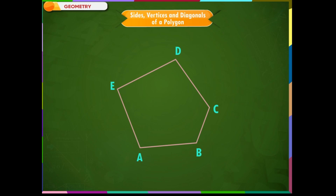Any two sides with a common end point are called the adjacent sides of the polygon. The pairs of adjacent sides are AB and BC, CD, CD and DE, DE and EA, and EA and AB.